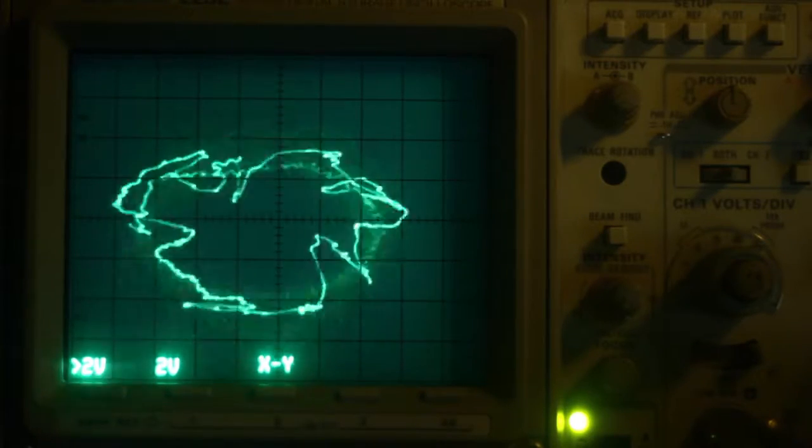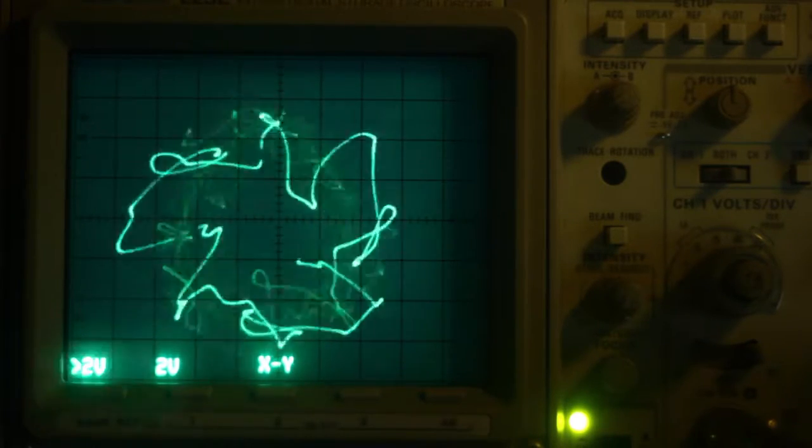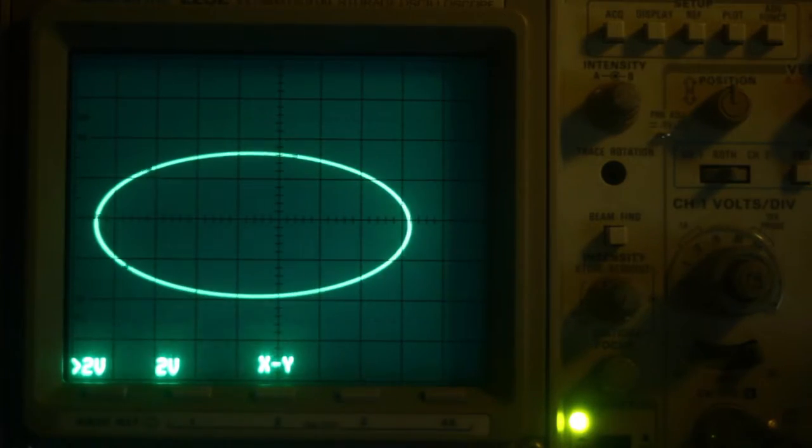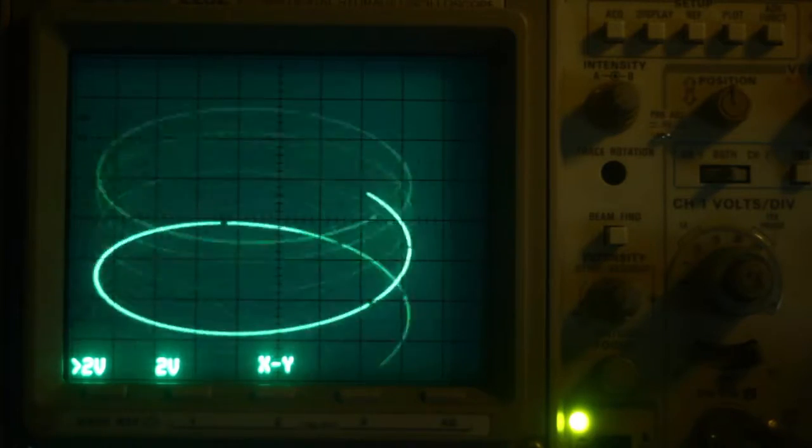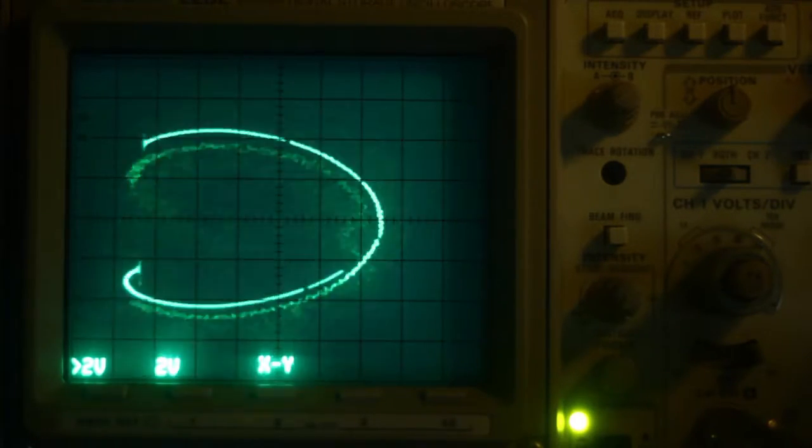We can alter its size and shape by increasing or decreasing the volume of both channels. Now we add a sawtooth waveform to the right channel. Our circle or ellipse turns into a spiral.